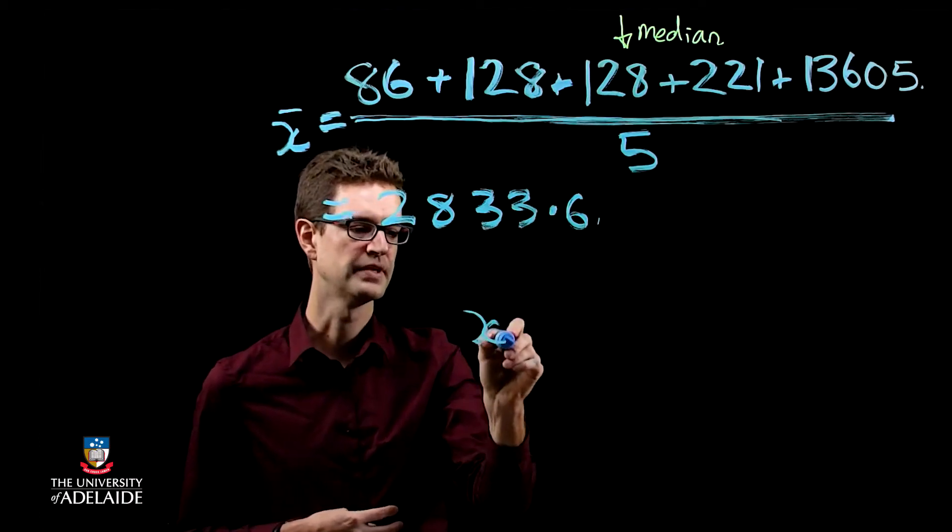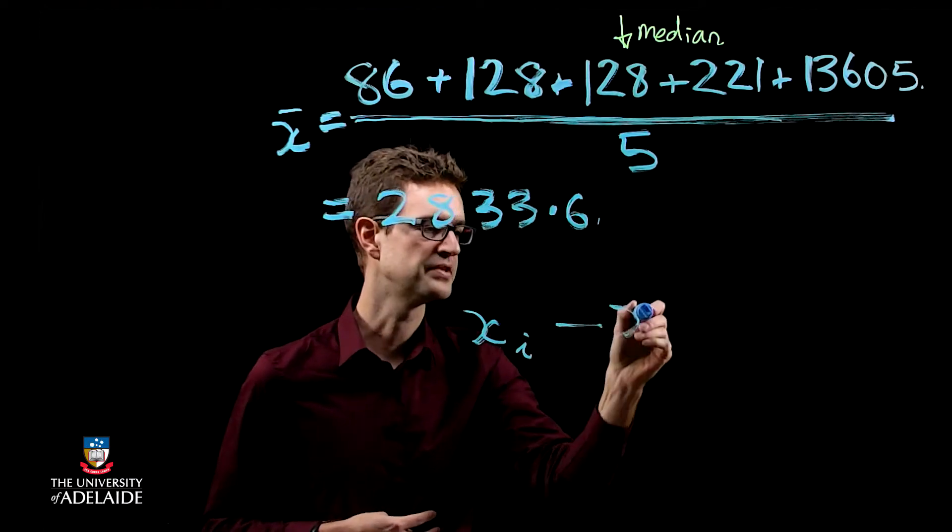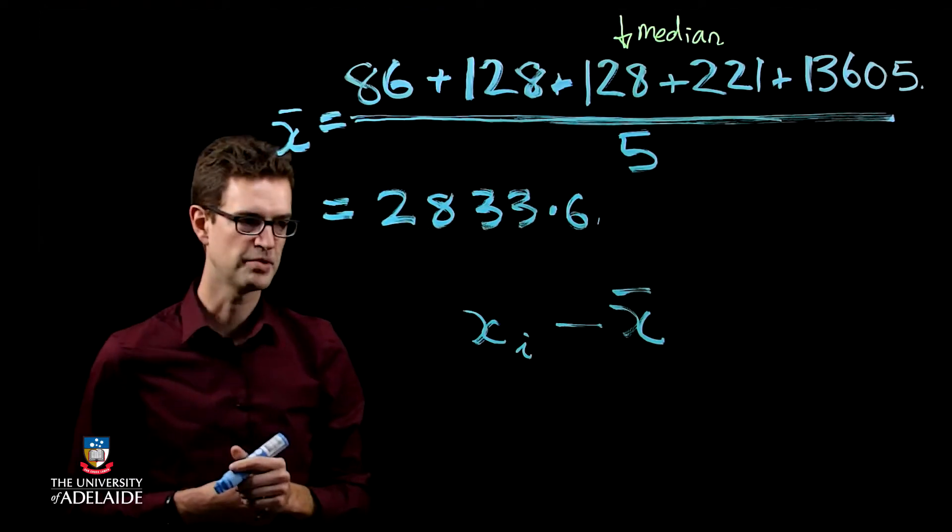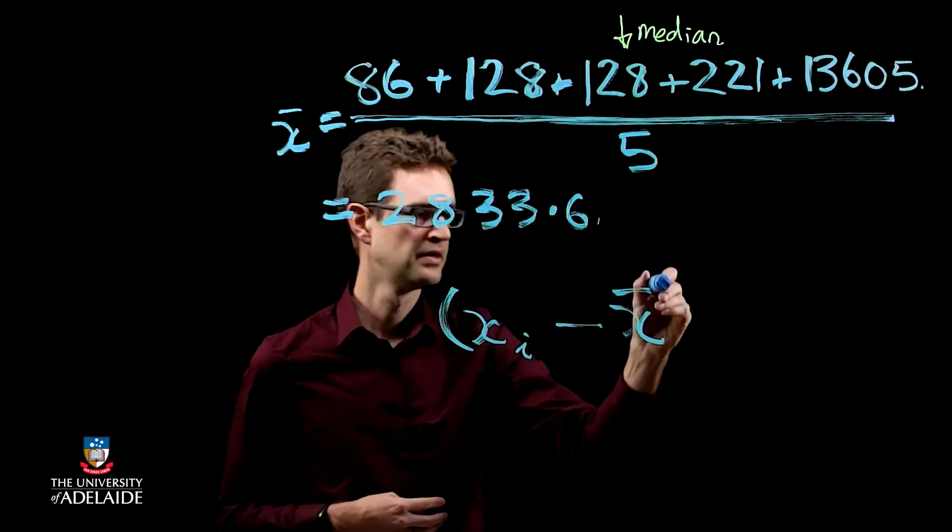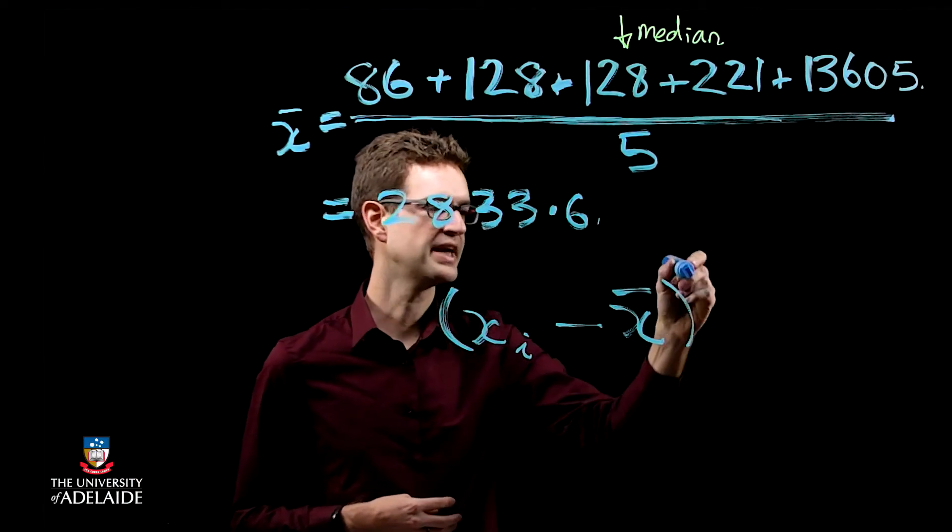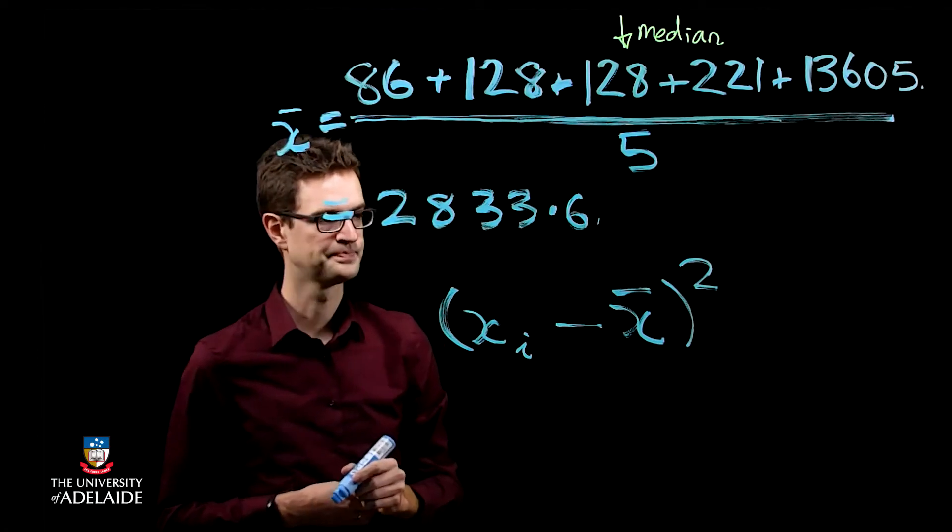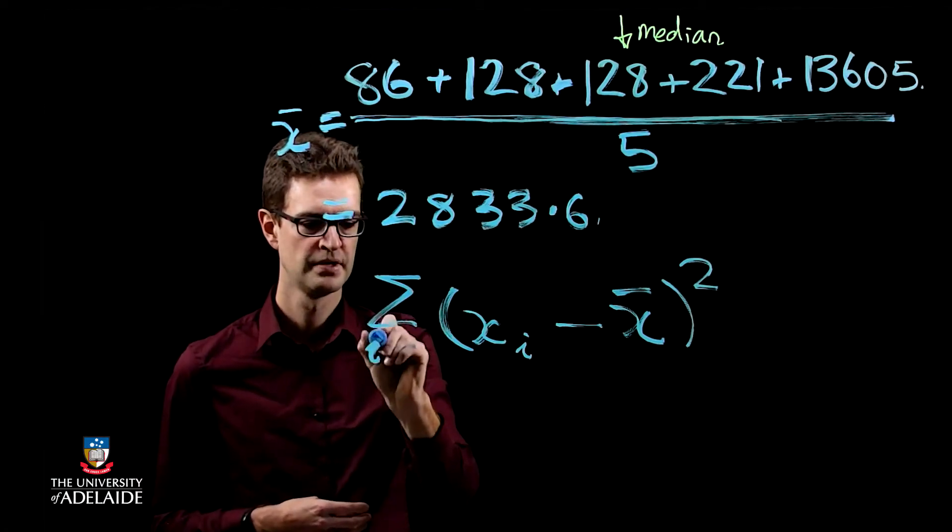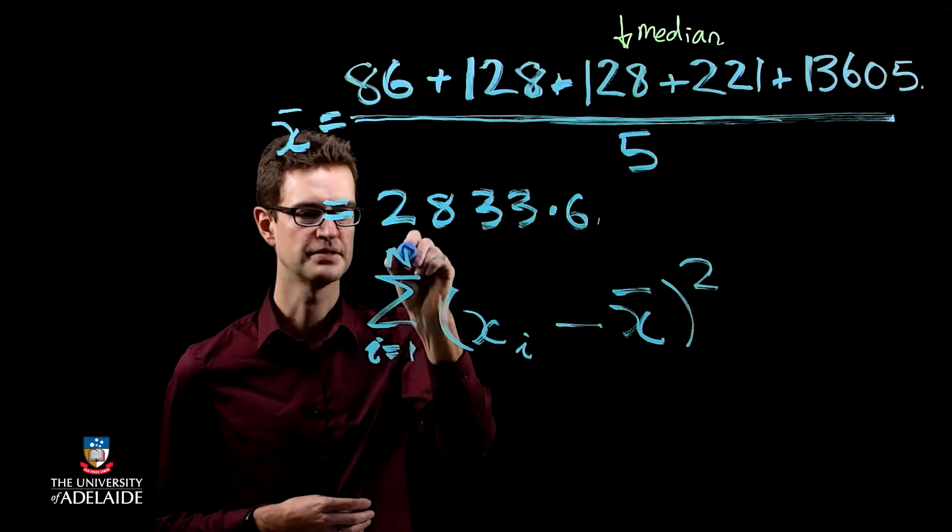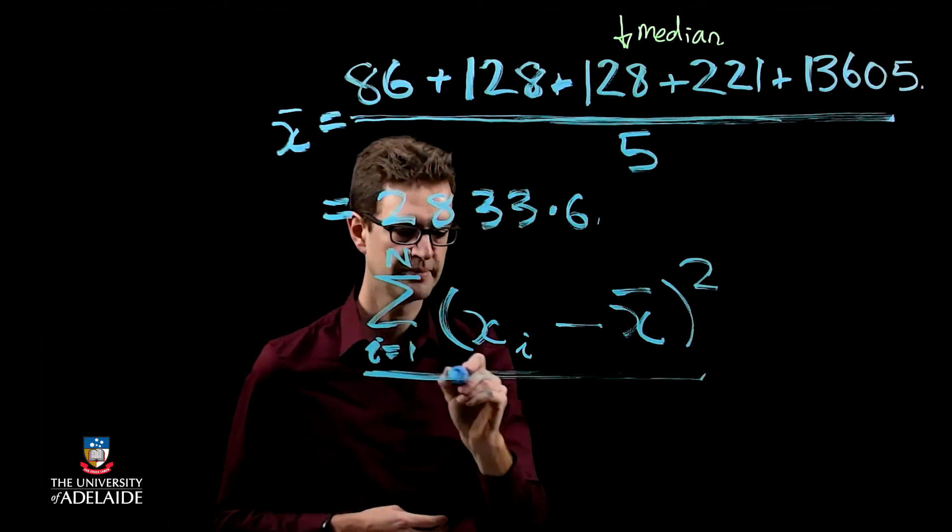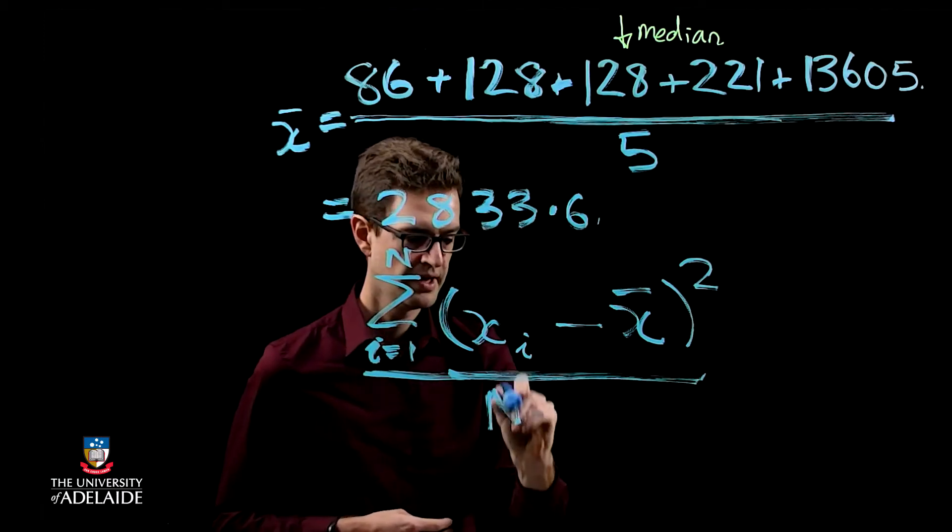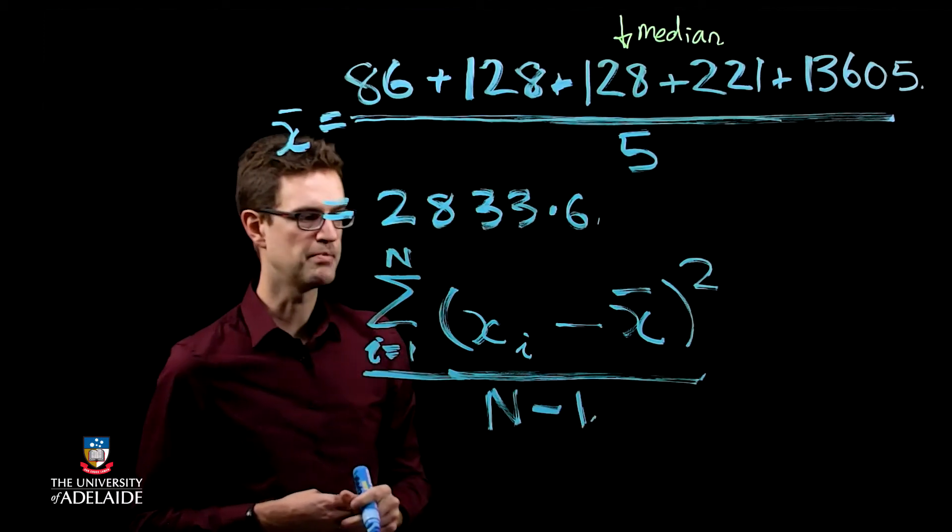And the way that we build that up is we take all of the differences from the mean of everybody in our sample. So that's all of my xi's take away the mean x̄. Because some of these numbers are negative, we square that. Then we add these up, starting from i equals 1, going up to the nth person in the population, or in the sample, sorry. And then we divide by n minus 1.